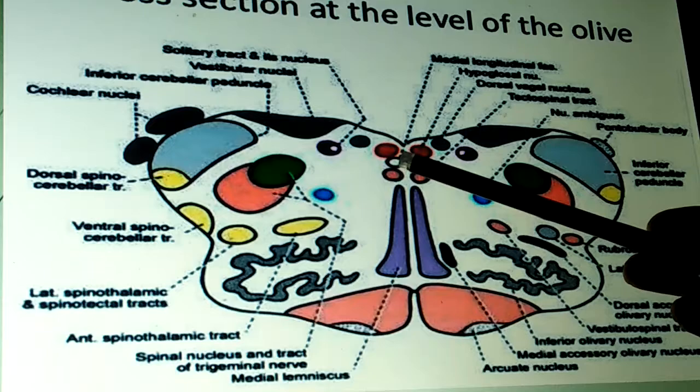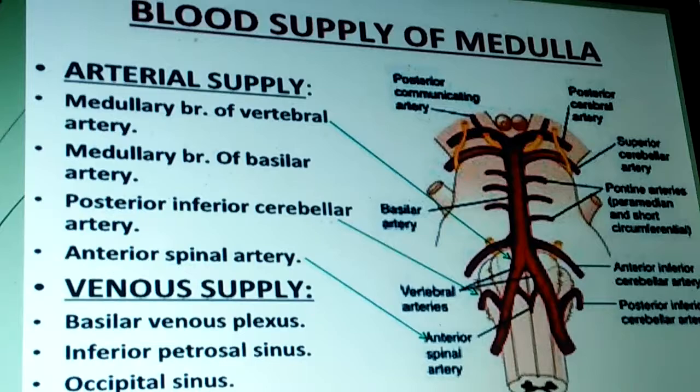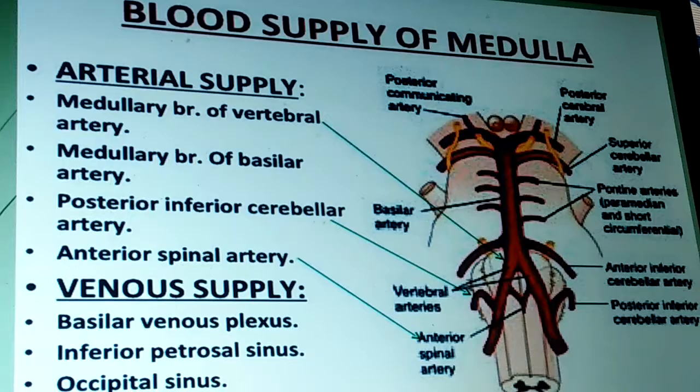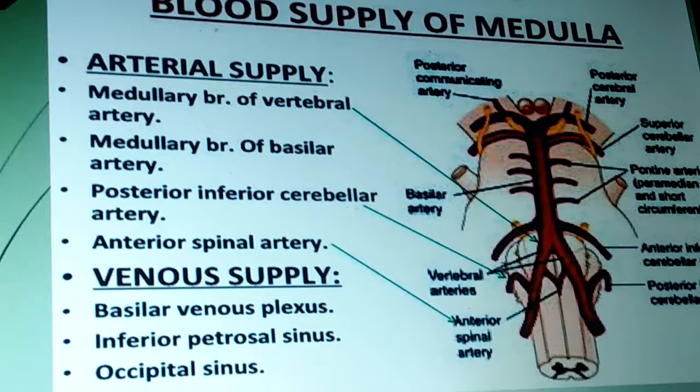Also at this level: ponto-bulbar body, nucleus ambiguus, tectospinal tract, hypoglossal nucleus, dorsal vagal nucleus, and medial longitudinal fasciculus. Blood supply of the medulla — arterial supply: medullary branches of the vertebral artery, medullary branches of the basilar artery, posterior inferior cerebellar artery, and anterior spinal artery. Venous drainage: basilar venous plexus, inferior petrosal sinus, and occipital sinus.